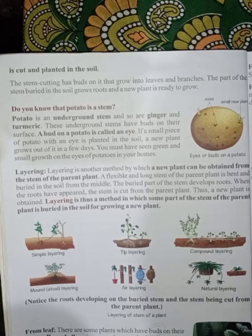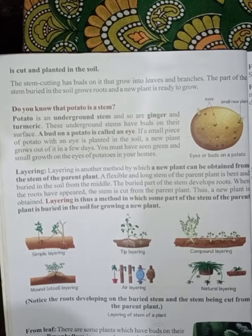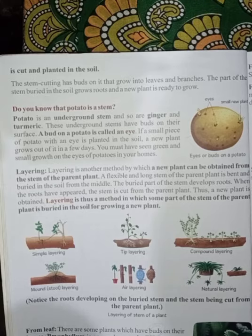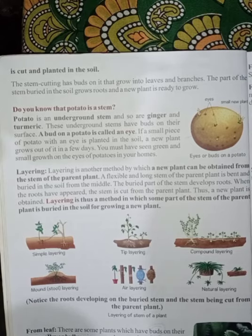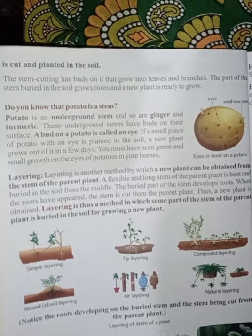From the leaves. How we can grow a new plant from the leaves. In some plants we see the buds on their leaves. And those buds are falling towards the ground and we are getting new plants.